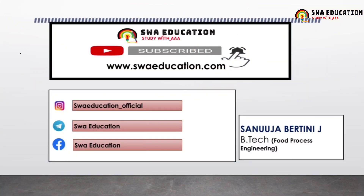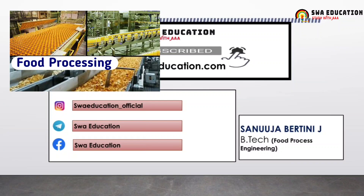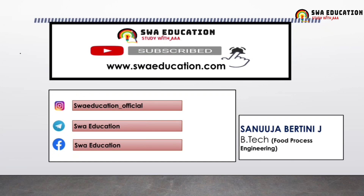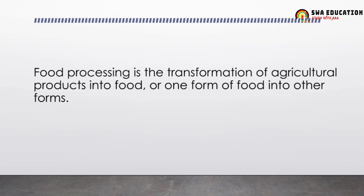Welcome everyone. Today we are going to learn about food processing, which is one of the major topics in the food safety officer examination. In today's class we shall learn certain concepts, terms, and definitions of food processing. Food processing is when we convert any kind of raw material — to be very precise, agriculture products — into food, which increases the shelf life of a product and meets the increasing demand of the population.